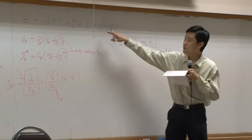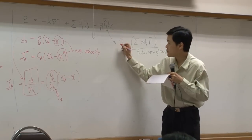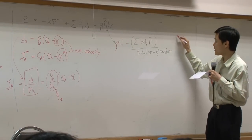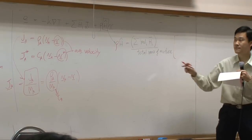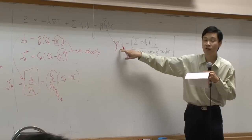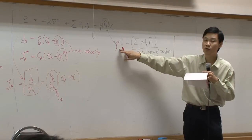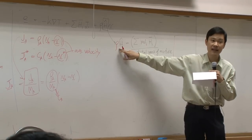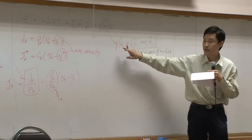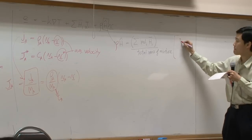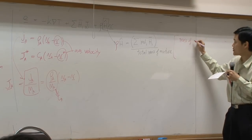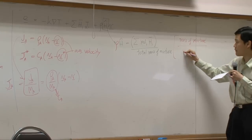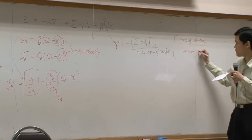From here you have rho. If I multiply by rho, rho itself can be thought of as total density — the total concentration of the mixture. All can be thought of as the density of the mixture. Density means mass of the mixture divided by volume of the mixture.